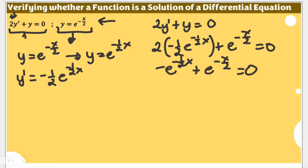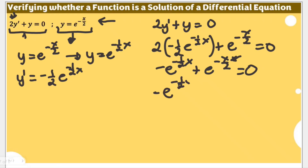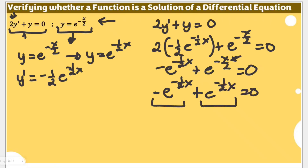Note that e to the negative one-half x and e to the negative x over 2 are the same. So we can rewrite this as negative e to the negative one-half x plus e to the negative one-half x, equal to 0. These are opposites, giving us 0 equals 0.